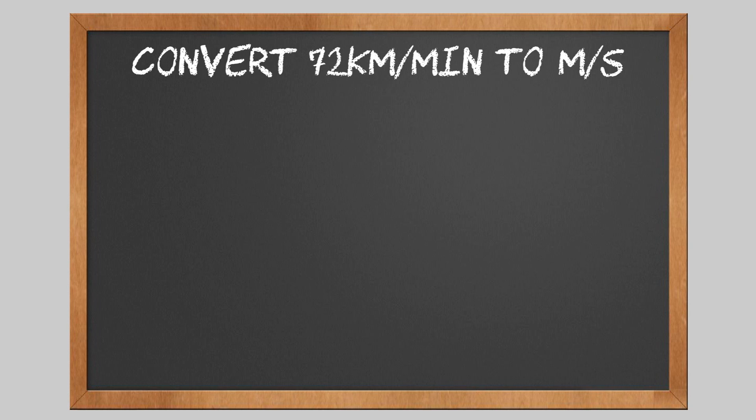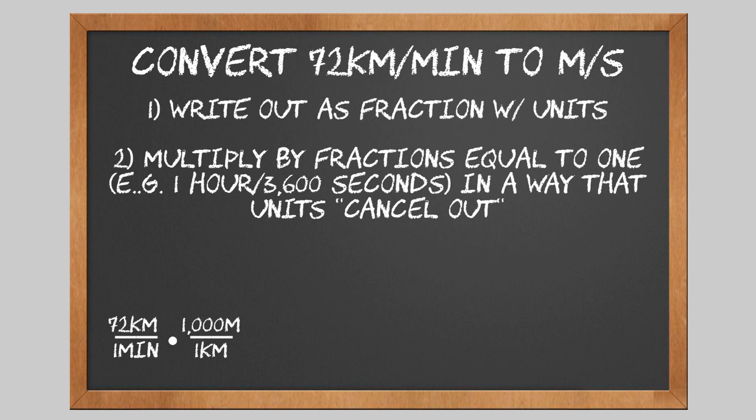The way we do this is by writing out the quantity we're converting as a fraction with units on the top and bottom. Then, we pretend we're cancelling out units. We can do this by multiplying the original quantity by fractions that are equivalent to 1. For example, 1 hour over 3600 seconds is equal to 1. Remember, multiplying any fraction by 1 doesn't change it.